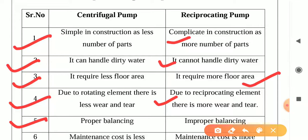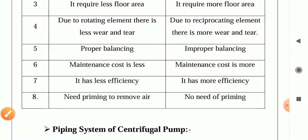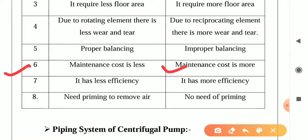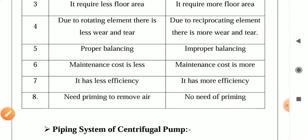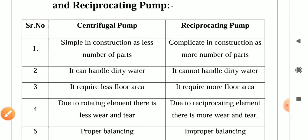In reciprocating pump, there is improper balancing. Maintenance cost of centrifugal pump is less; maintenance cost of reciprocating pump is more. Centrifugal pump has less efficiency; reciprocating pump has more efficiency. Centrifugal pump needs priming to remove air; reciprocating pump has no need of priming. These are the points differentiating centrifugal pump and reciprocating pump, and this is also asked for four marks.